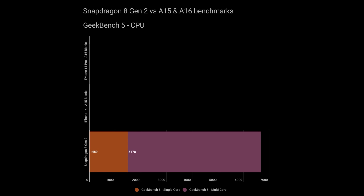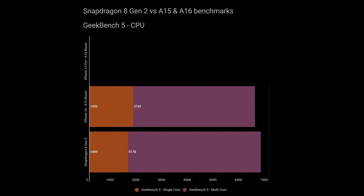Starting with Geekbench 5 CPU scores for the Snapdragon 8 Gen 2: 1,489 for single-core (from the Cortex-X3) and 5,178 for multi-core. Compared to the iPhone 14 with A15 Bionic, Apple is still the single-core leader at 1,696 versus 1,489. However, in multi-core — hexa-core versus octa-core — the Snapdragon now leads with 5,178 versus 4,742 for the A15 Bionic.